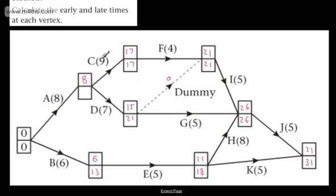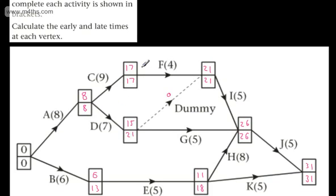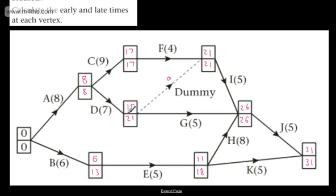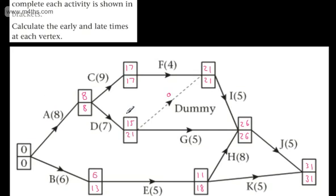Continuing the back pass: we get nine here, and working back with eight takes us to the source node, which will always be zero. On the back pass we're finding the lowest number, whereas on the forward pass we found the highest. I is dependent on D and F, which means we take the larger value on the forward pass as both must be completed before I. This is just working through your early and late event times. In the next video we'll go on to float, and then we'll look at critical activities and critical paths.